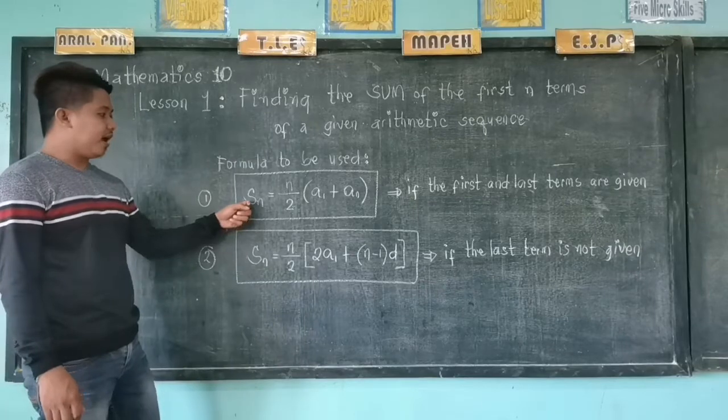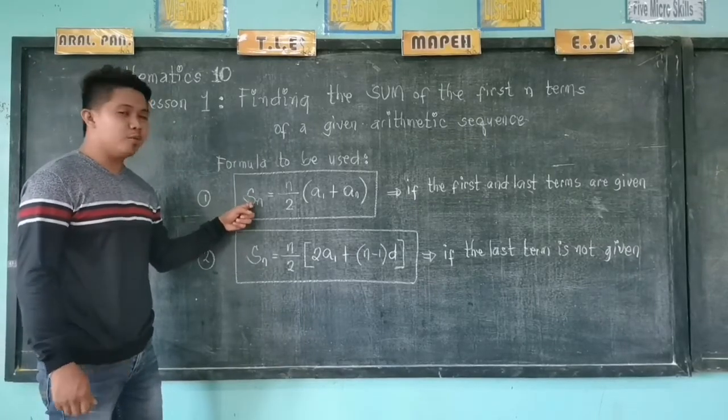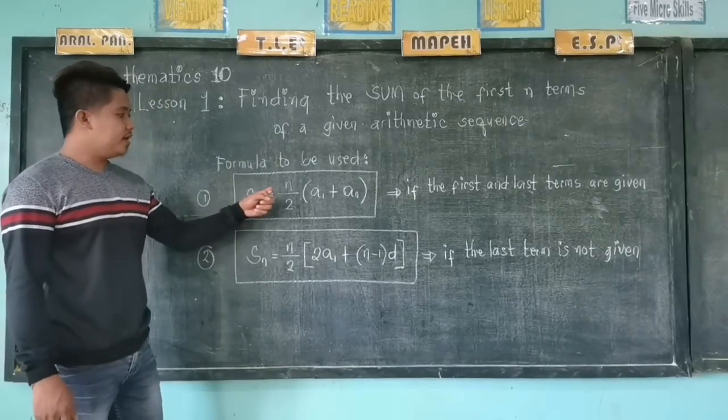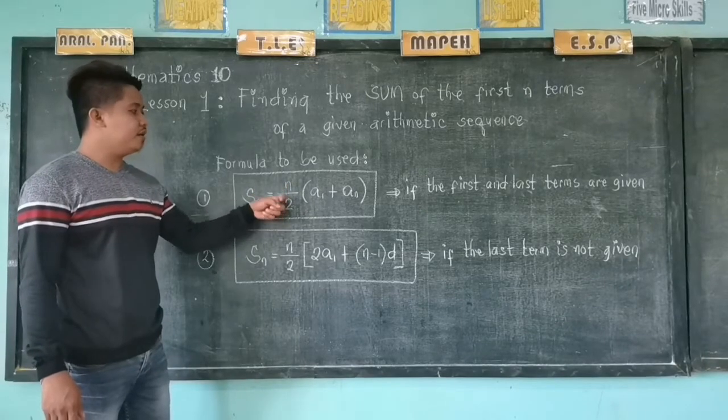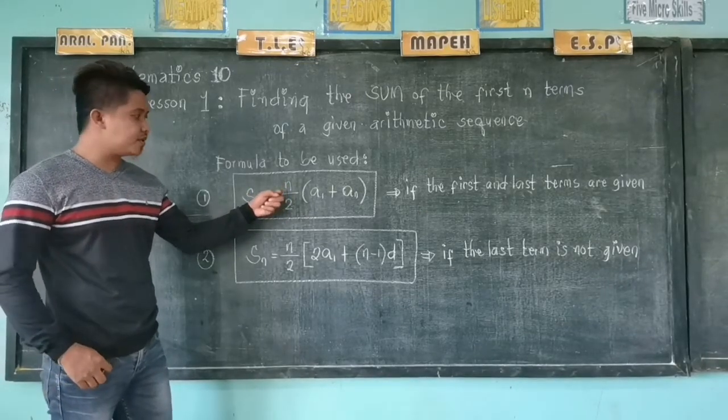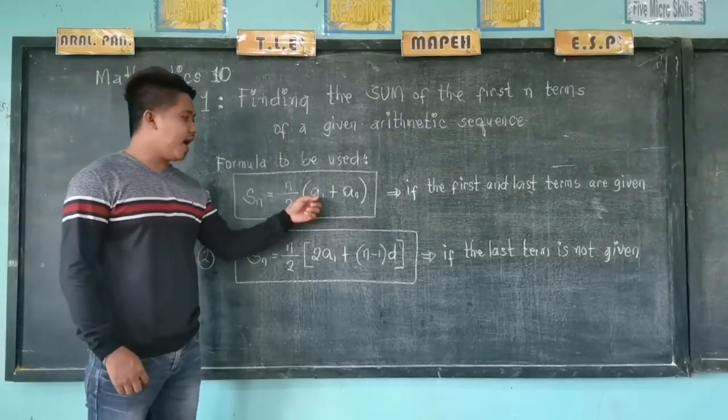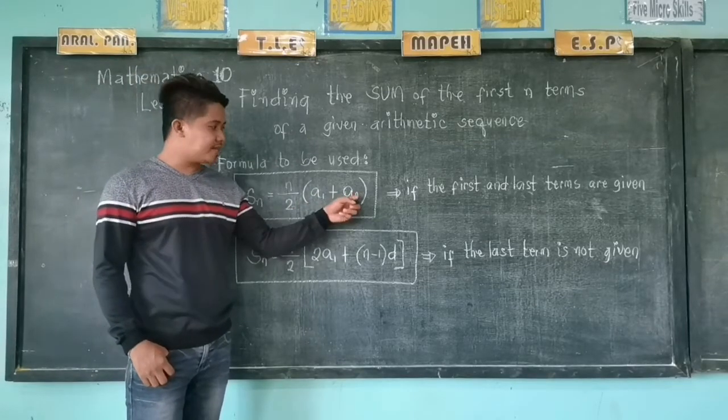The first one is S of n, this is the sum of n terms, equals n over 2, n is the number of terms, times the quantity a sub 1 plus a sub n.